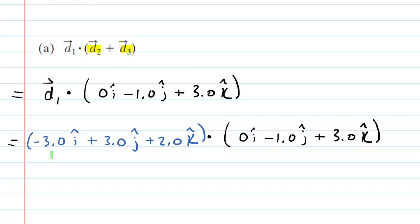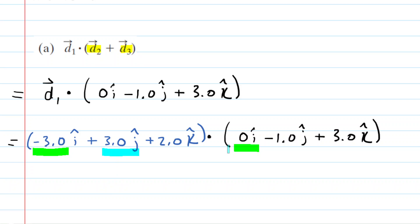This is very straightforward. With a dot product, you're going to multiply the x components, multiply the y components, and then multiply the z components as well. Then you'll just add those three products together.